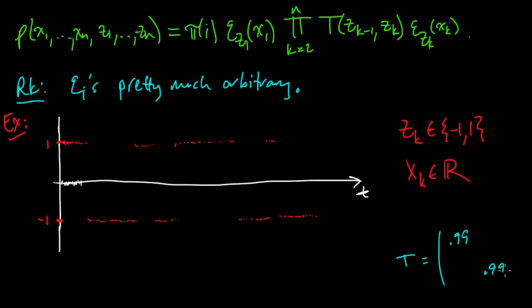And you could easily write down a transition matrix for that. So T would be something like 0.99, 0.99, 0.01, 0.01, something like this. So the probability that you stay in the same state is very high. And the probability that you switch, it doesn't have to be a symmetric matrix. It has to be a stochastic matrix.